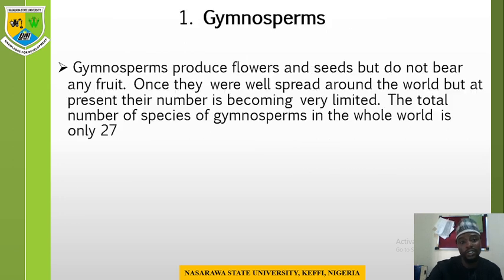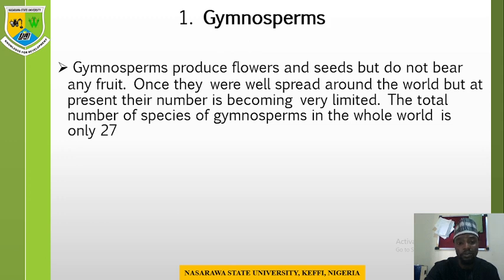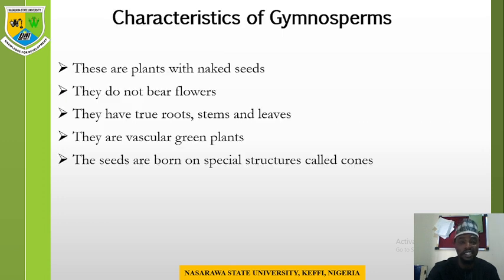Gymnosperms produce flowers and seeds but do not bear any fruit. They were once well spread around the world, but at the present time their number is becoming very limited. Most species of gymnosperms have gone into extinction. The total number of species of gymnosperms in the whole world is only about 27, according to recent literature.